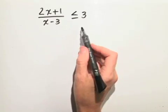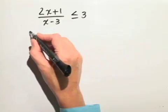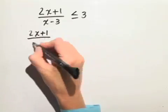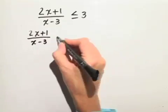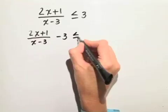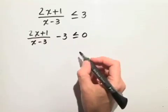So we'll subtract 3 from both sides. And we have 2x plus 1 over x minus 3 minus 3 is less than or equal to 0.